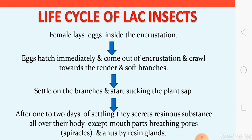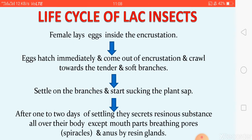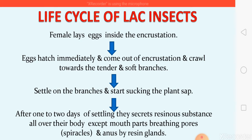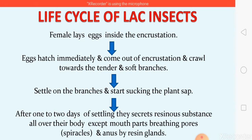After emergence, the nymphs move toward the tender branches of the host plant — the soft branches — so they can easily penetrate their proboscis and suck the phloem sap. After moving to the tender branches, they start feeding on the phloem sap by sucking through their proboscis. After one to two days of settling, they stop moving and find a suitable place to feed.